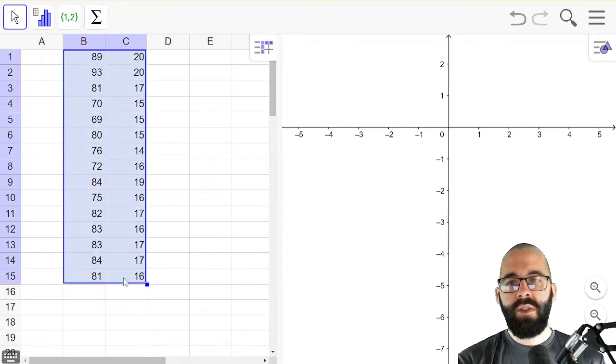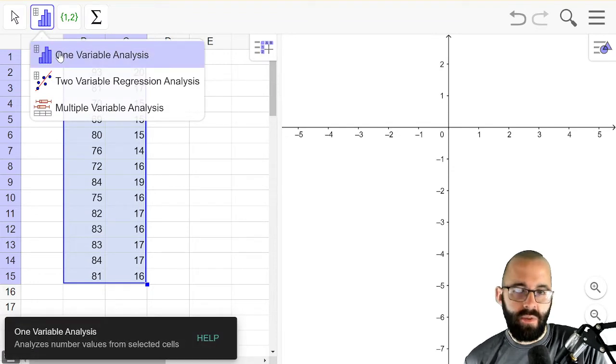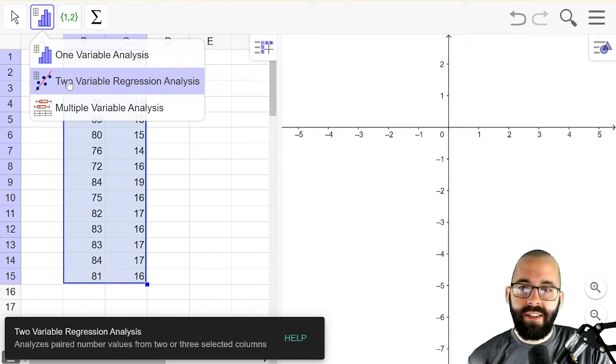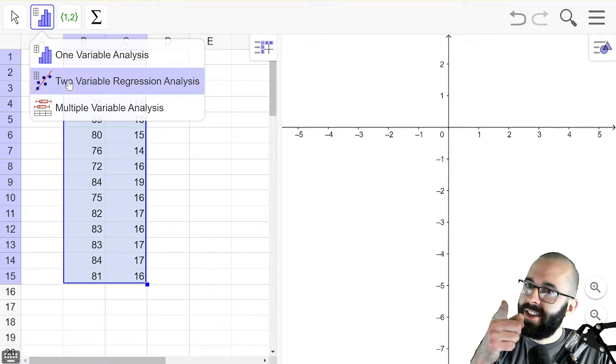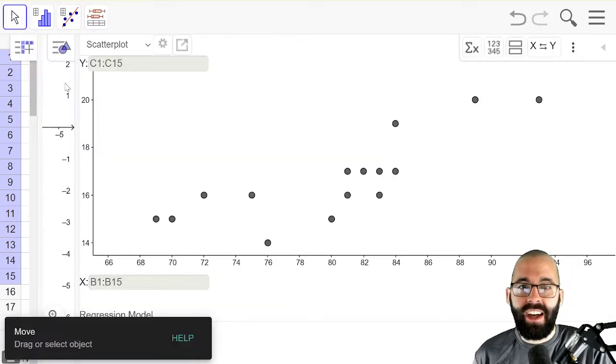Once your data is in two columns just highlight both columns and now instead of clicking one variable analysis which gave us histograms and bar charts we're going to use two variable analysis which is going to give us, look at the picture, a scatter plot and eventually we're going to do some lines.